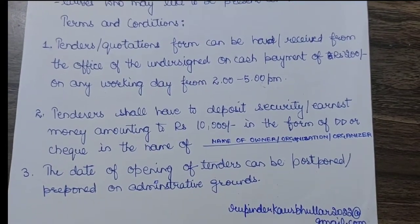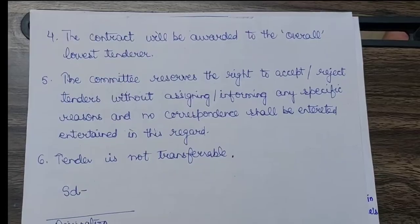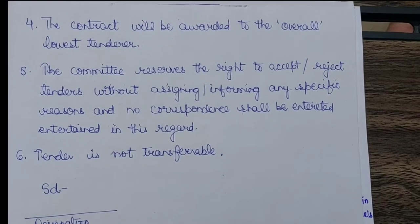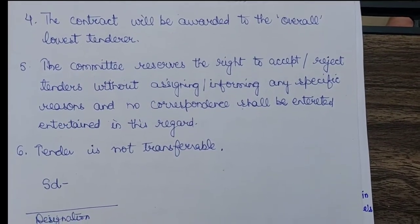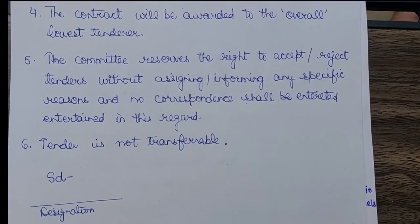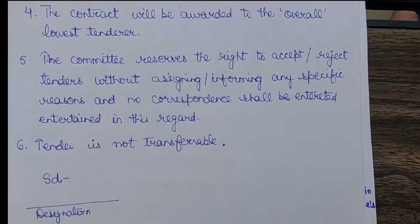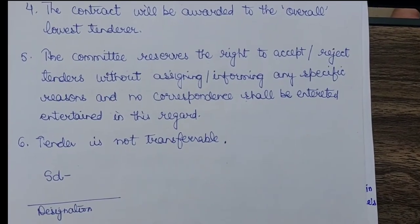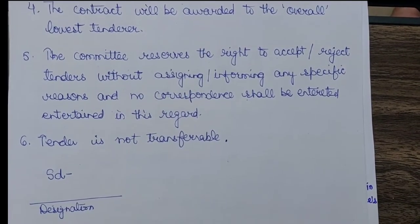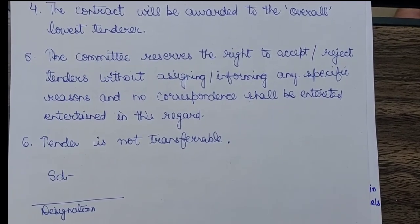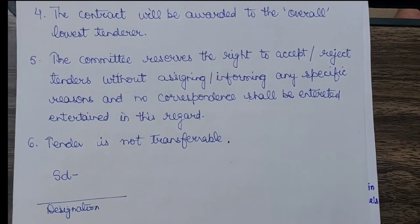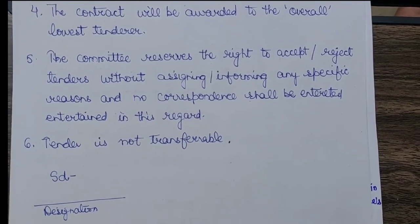Continuing with the same — the fourth point is that the contract will be awarded to the overall lowest tenderer. Quotations are invited from you as an estimate. For example, one person says they will install the entire plant for one crore, another says four crore, and another says ninety percent. So the work is handed over to whoever gives the lowest quotation — the overall lowest tenderer gets the contract.